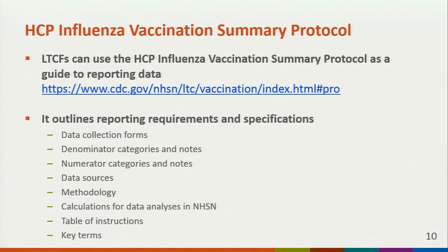The healthcare personnel influenza vaccination summary protocol provides guidance for a facility to collect and report influenza vaccination summary data for the vaccination module. It includes comprehensive information about reporting requirements and specifications, such as numerator and denominator categories, methodology, data analysis, and key terms. Each long-term care facility should thoroughly review the protocol before collecting and entering data into NHSN.